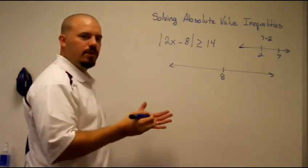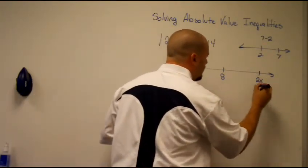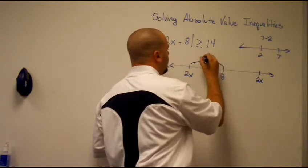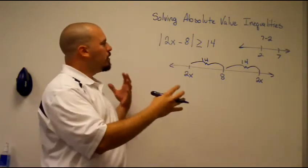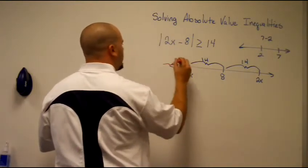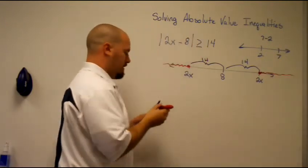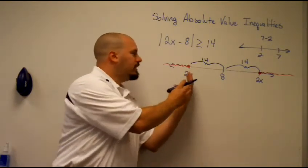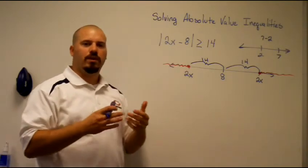So where's 2x? Well, 2x could be over here or 2x could be over there. But what we know is this distance between them is more than 14. So really, 2x has to be falling somewhere out here, including that spot, or somewhere way out on the other side. It's got to be more than 14 units away from 8.